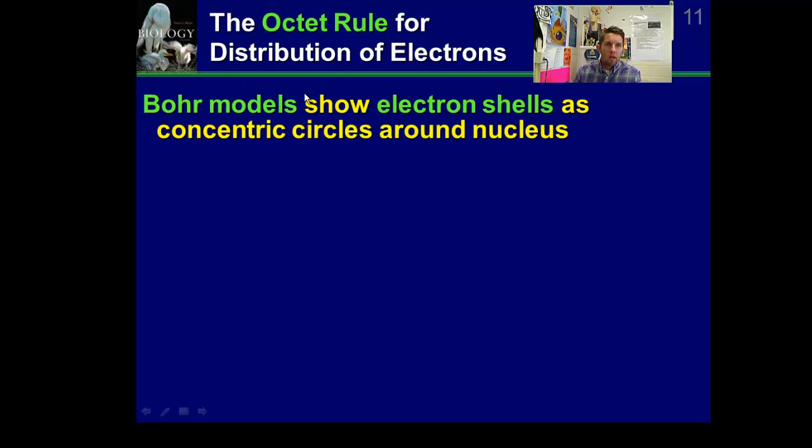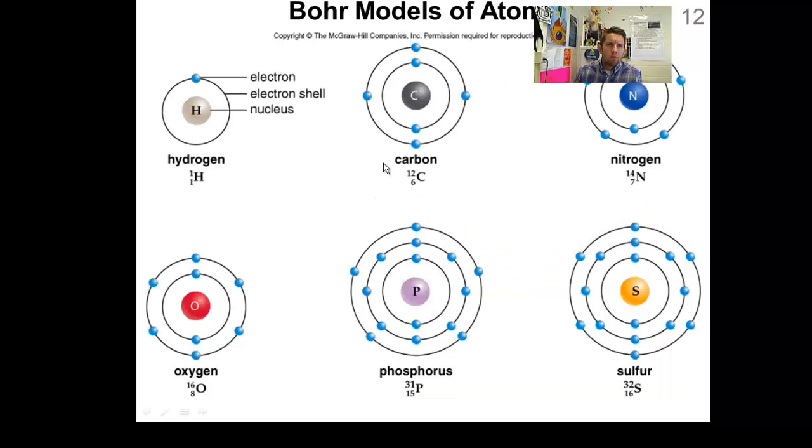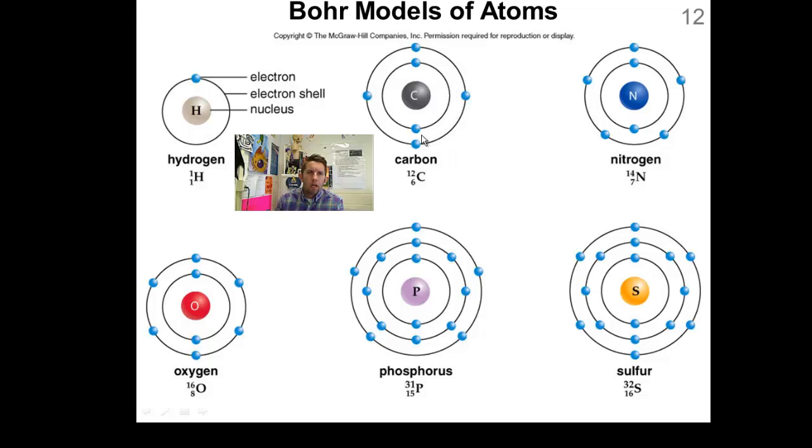Finally, one last thing about electrons. The octet rule. You've drawn Bohr models in the past. This is what Bohr models look like. This shows electron distribution. Here's carbon. It has 6 protons, 6 electrons. Because it's neutral. How many electrons can go in that innermost orbital? 2 can. Where do the rest go? They go in the next outermost shell. So, 4 go here.